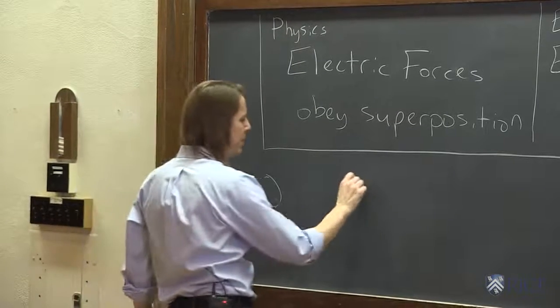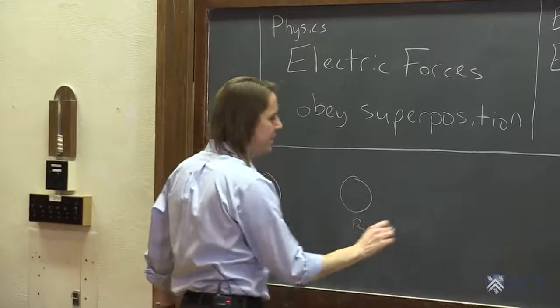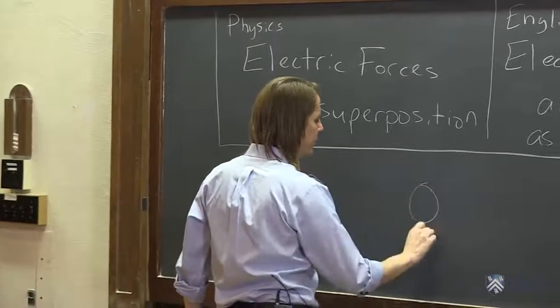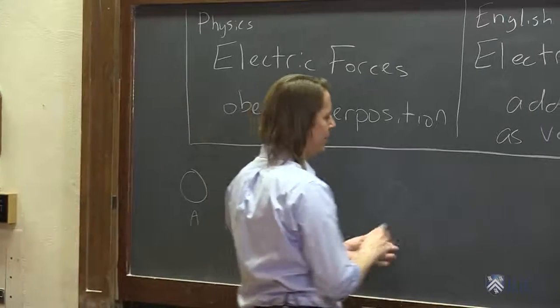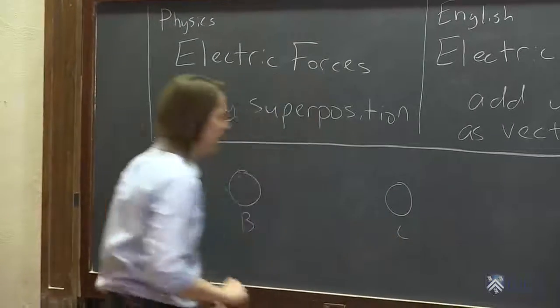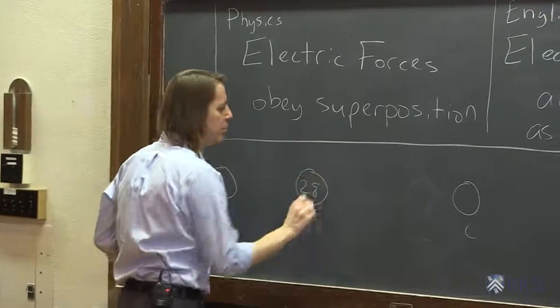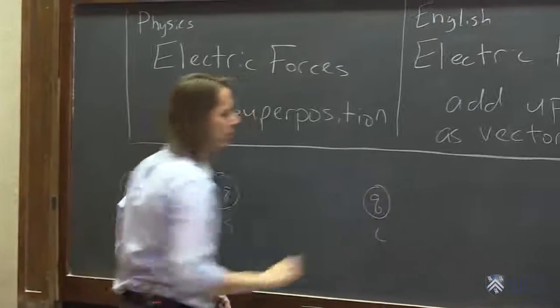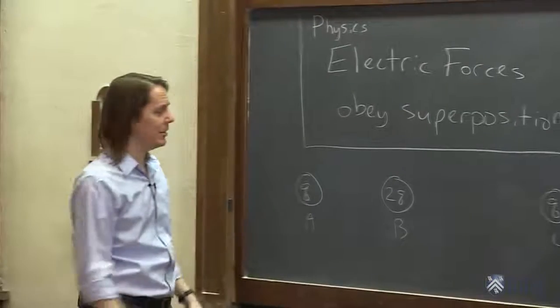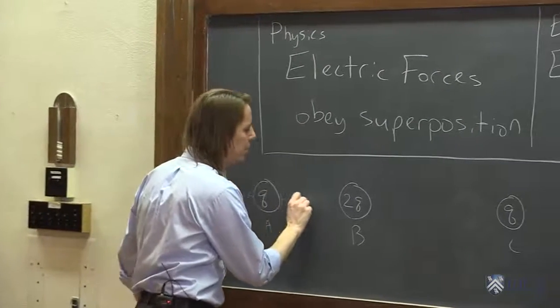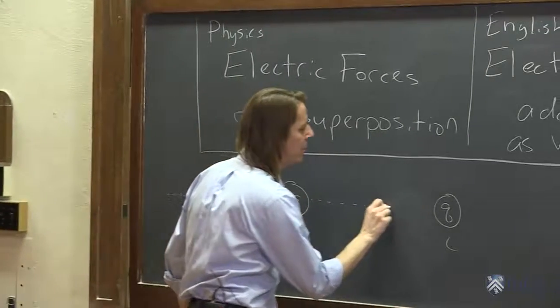So let's have charge A, and let's have charge B, and over here let's have charge C. Let's put it further away, over here. This one has a charge Q, and this one has a charge 2Q, and this one has a charge Q. I'm just making this up. And you can see they all happen to fall on the same line.